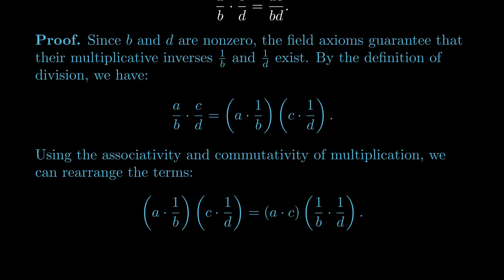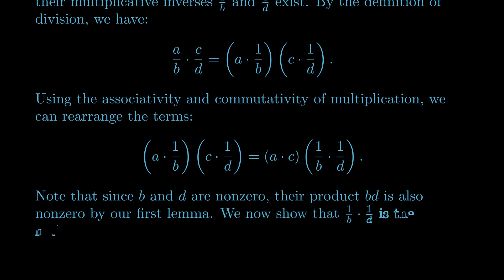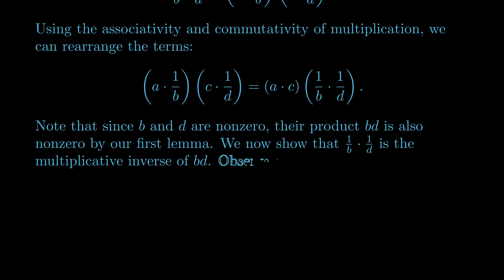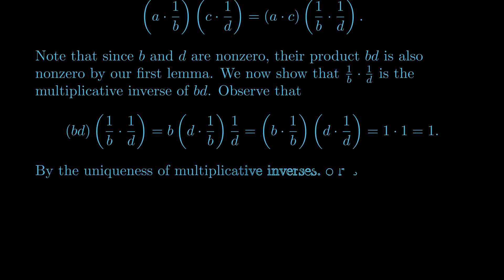Using the associativity and commutativity of multiplication, we can rearrange the terms, grouping a and c together and 1/b and 1/d together. Next, note that since b and d are non-zero, their product is also non-zero, by our first lemma. We now need to show that (1/b) × (1/d) is the multiplicative inverse of bd. Using commutativity and associativity, we can start with the product bd × (1/b) × (1/d), and rearrange so that b and 1/b become 1 and d and 1/d become 1. By the uniqueness of multiplicative inverses, our second lemma, it follows that (1/b) × (1/d) = 1/(bd).